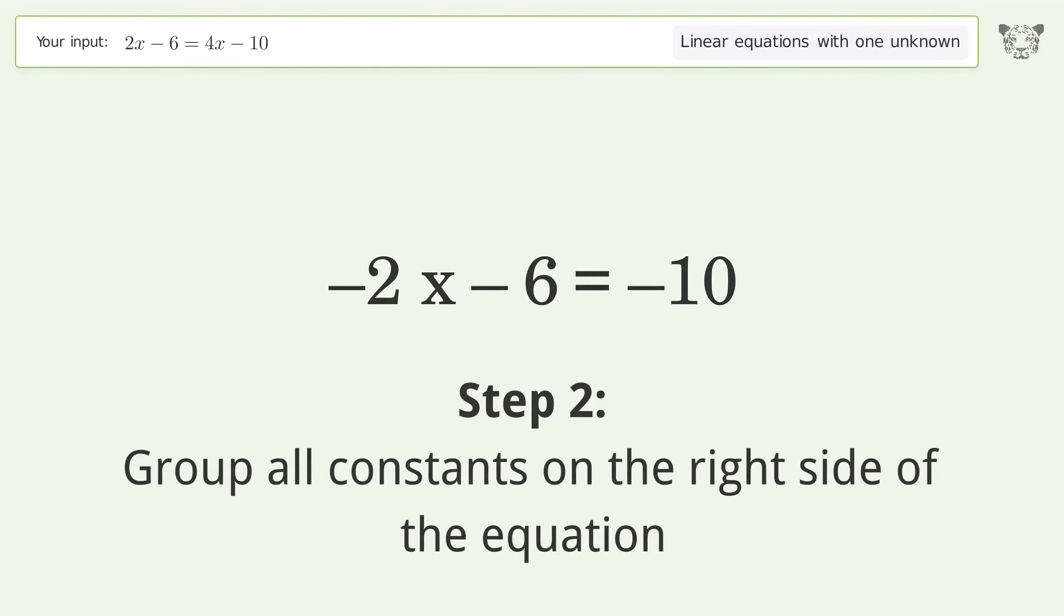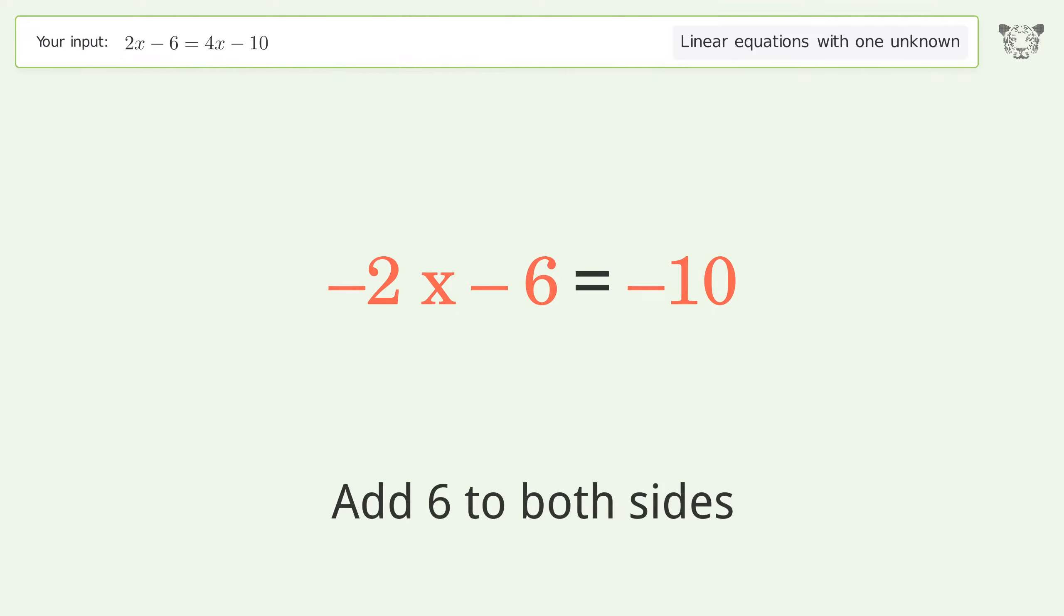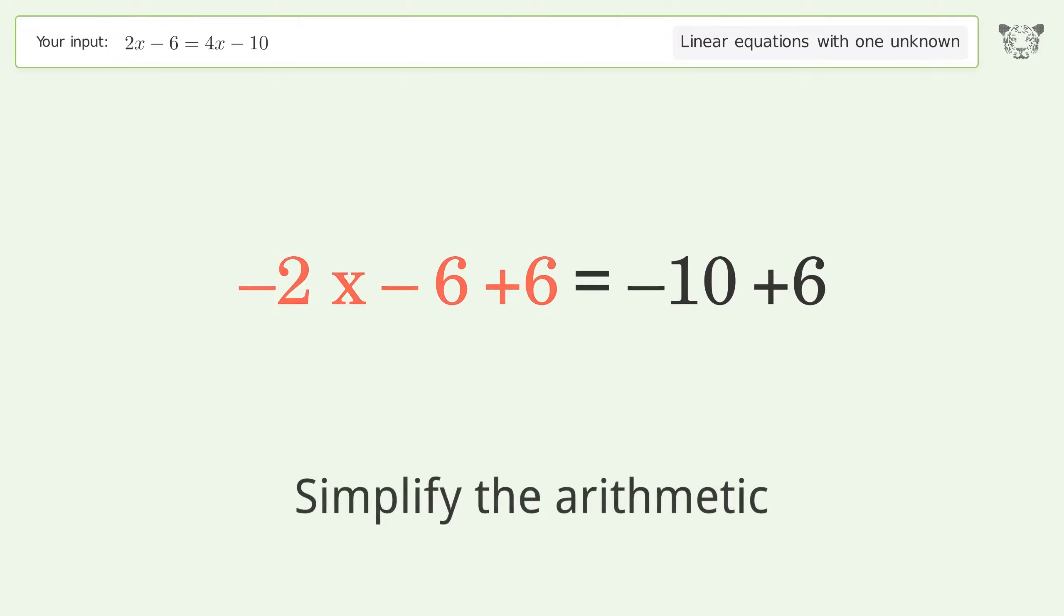Group all constants on the right side of the equation. Add 6 to both sides. Simplify the arithmetic.